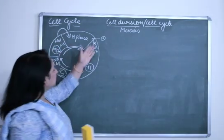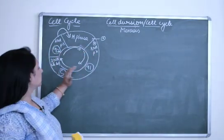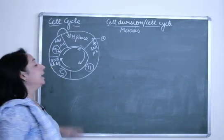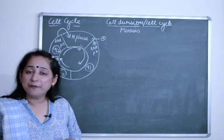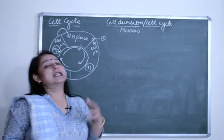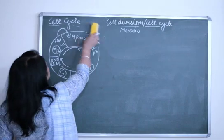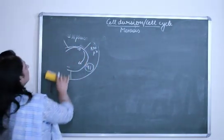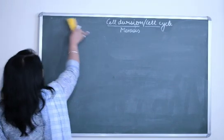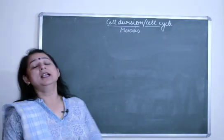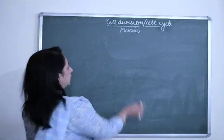This is our cell cycle. If a question is asked from cell cycle, they can ask you the sequence, the longest phase, where duplication occurs, where RNAs and proteins are formed, or what is the significance of the M phase. These are certain questions which can be asked. This diagram has rarely appeared in papers, so there are less chances of it appearing.